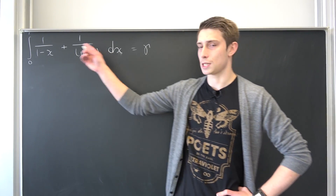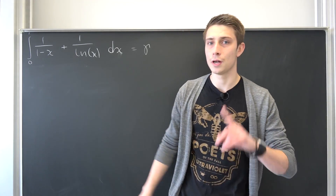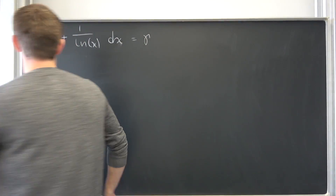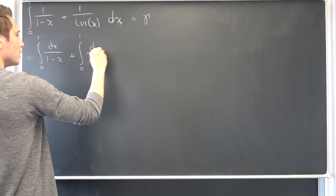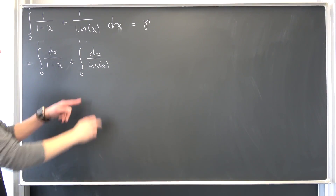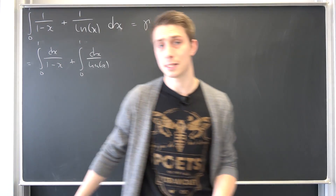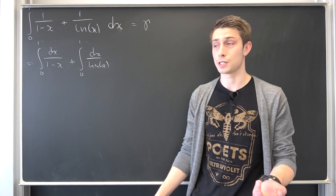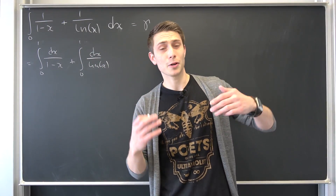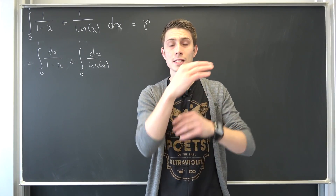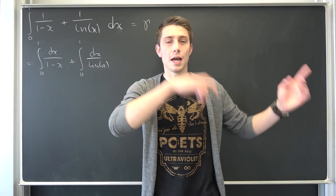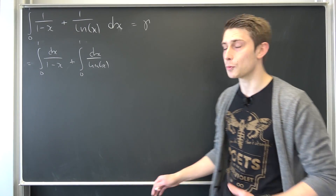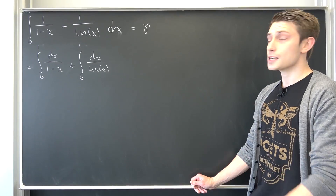At first I would like to make use of the integral's linearity, meaning breaking this up into two separate integrals. We're going to end up with the integral from 0 to 1 of dx over (1 minus x), plus an integral from 0 to 1 of dx over ln(x). In number theory this right here is actually quite a famous integral — it's called the logarithmic integral, discovered by daddy Euler. It has something to do with the distribution of primes. This thing is basically equivalent to the exponential integral that diverges pretty fast.